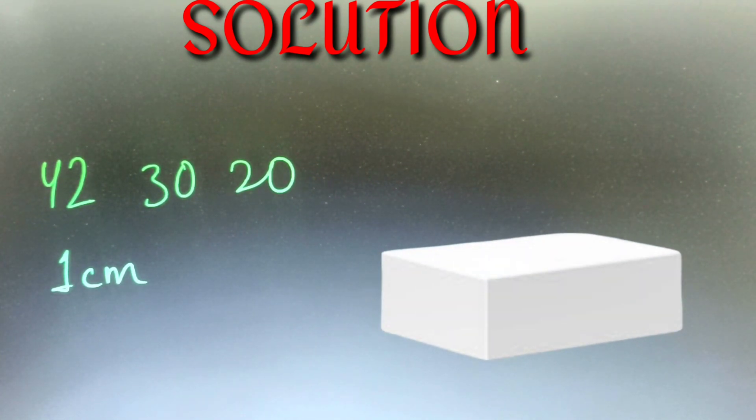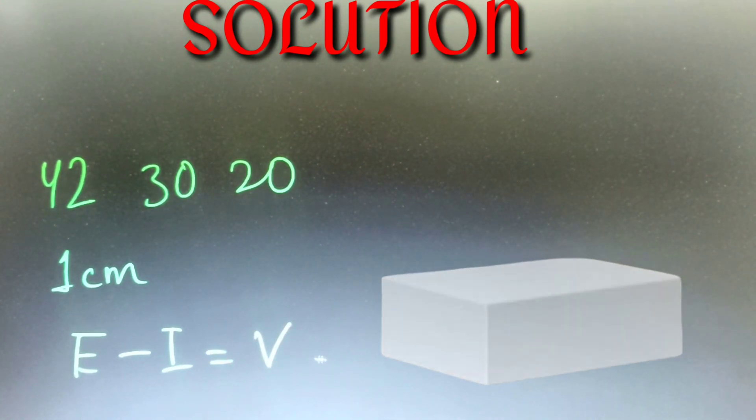You can see we have a cuboid with thickness of 1 centimeter. What we have to do is first find the external volume, then find the internal volume, and then subtract these two. This will give us the volume of the wood used.